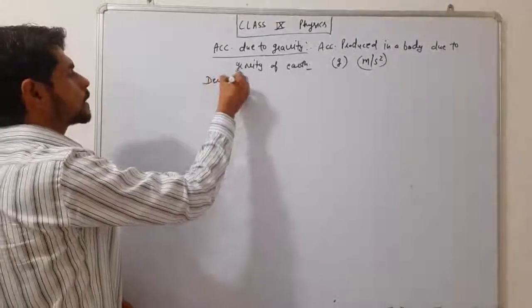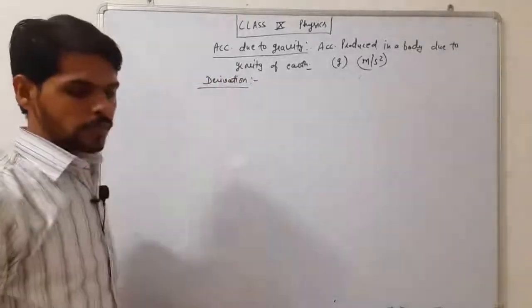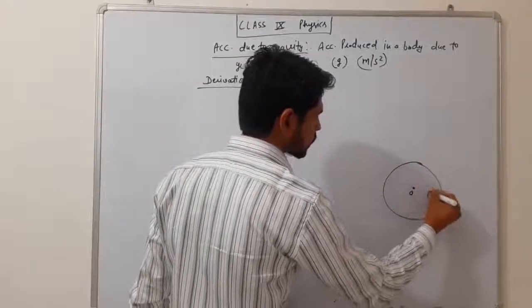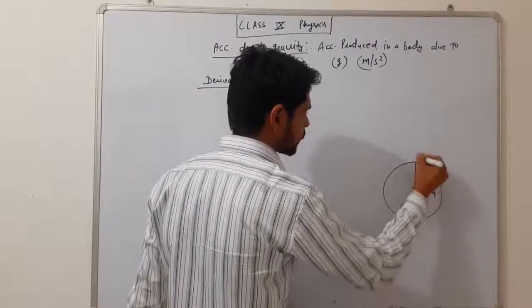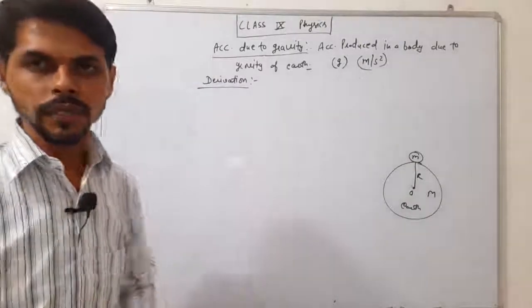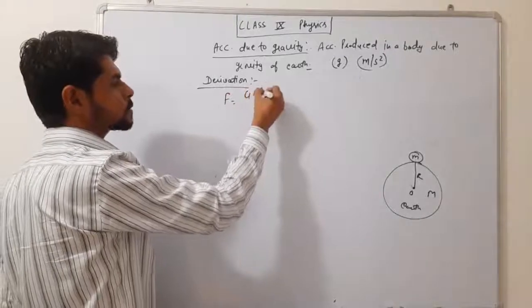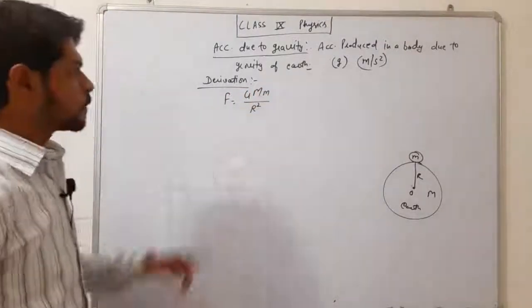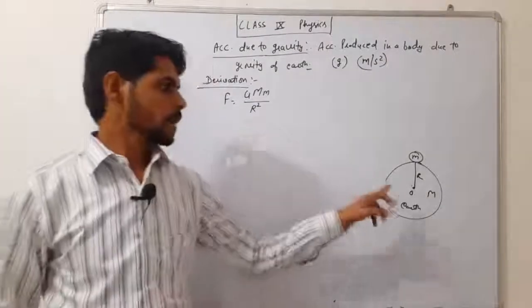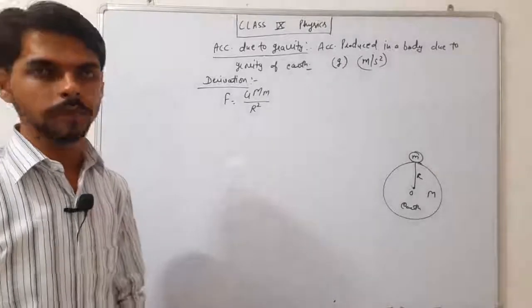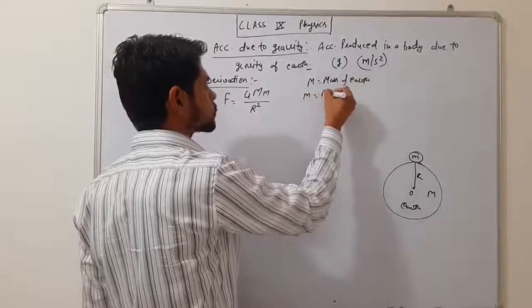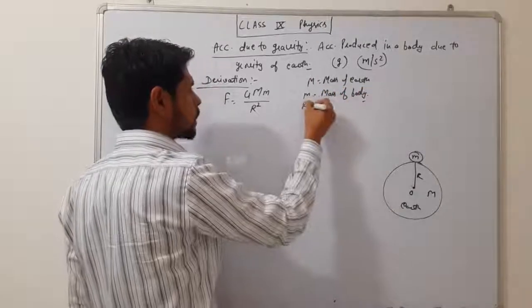Now we have the derivation of acceleration due to gravity. Earth's center is O, Earth's mass is M, Earth's radius is R. On the Earth's surface there is a body whose mass is m. Using Newton's law of gravitation, the gravitational force between two bodies is F = G × M₁ × M₂ / d². Here the two bodies are Earth (mass M) and the surface body (mass m), separated by distance R (radius of Earth).